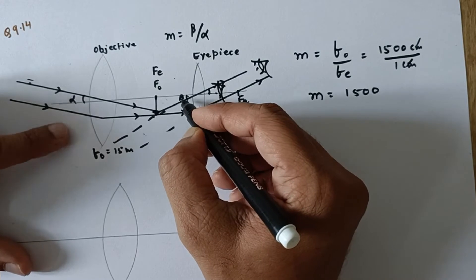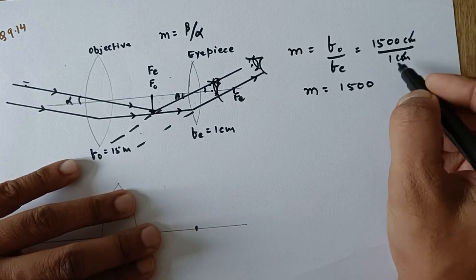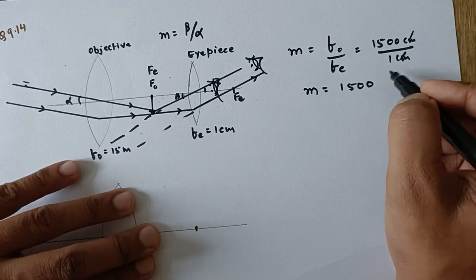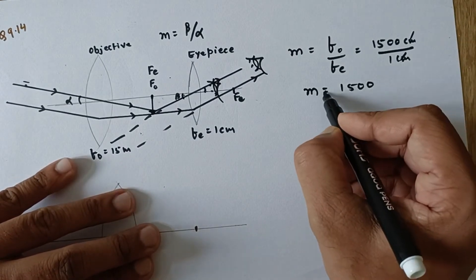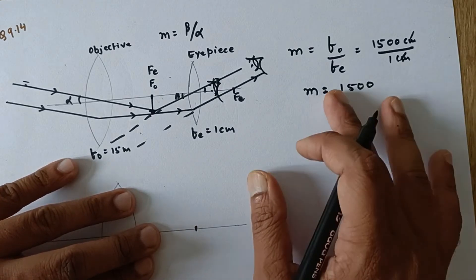So that means this angle is magnified 1500 times compared to this angle. You should be careful that we need to convert both of them into same units in order to cancel it. Magnifying power does not have a unit. Please do not confuse this with magnification.